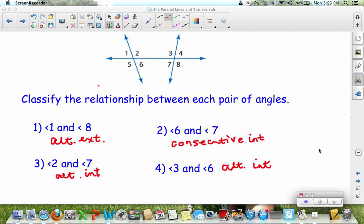Okay, here are the answers. 1 and 8 are alternate exterior. 2 is consecutive interior because they're on the same side of the transversal. And 3 are alternate interiors. And 4 for angles 3 and 6 are also alternate interior because they're on either side of the transversal inside the interior part of the lines.